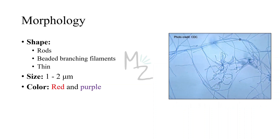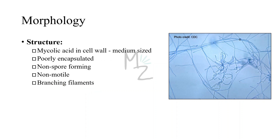Morphology: Nocardia asteroides is rod-shaped and forms beaded branching filaments. It is thin, varying in size from 1 to 2 micrometers. It stains red with acid fast stain and purple with gram stain. Regarding structure, this bacterium has medium-sized mycolic acid in its cell wall. Strictly acid fast bacteria have large-sized mycolic acid, while weakly acid fast bacteria have medium-sized mycolic acid. Nocardia asteroides is poorly encapsulated, does not form spores, and is non-motile.